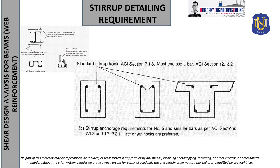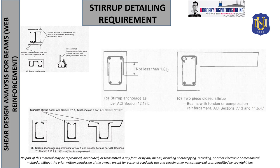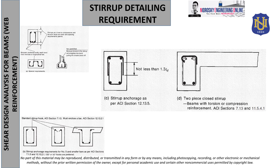This is the ACI version code, but there is an NSCP version as well. The stirrups can have an angle of cut — there are provisions for 90 degrees and less than 170 degrees. There are also provisions for overlapping, anchorage, development lengths, and what is called enclosure stirrups — the black one that encloses the bar so it does not pull out.